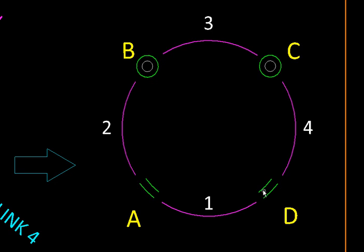Now we are going to fix link number three like this. That makes link two and link four as the input and output links. Since they are connected to the fixed link through these two pins which are capable of complete rotation, both two and four will rotate completely.